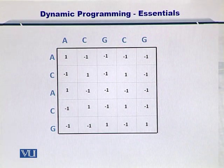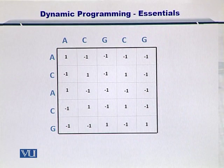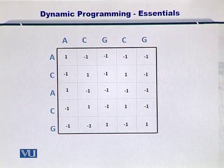So here I have shown you the dot plot now, which is modified and the matches have been indicated by one and the mismatches have been indicated by minus one.